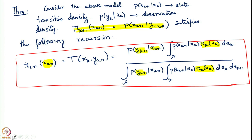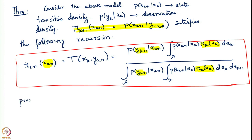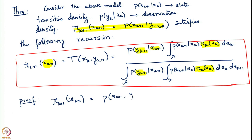How does one prove this? The proof is rather simple. We really only have to use the definition of the posterior conditional density. So π_{k+1}(x_{k+1}) is nothing but the joint density p(x_{k+1}, y_1 to y_{k+1}) divided by the marginal density of y_1 to y_{k+1}.